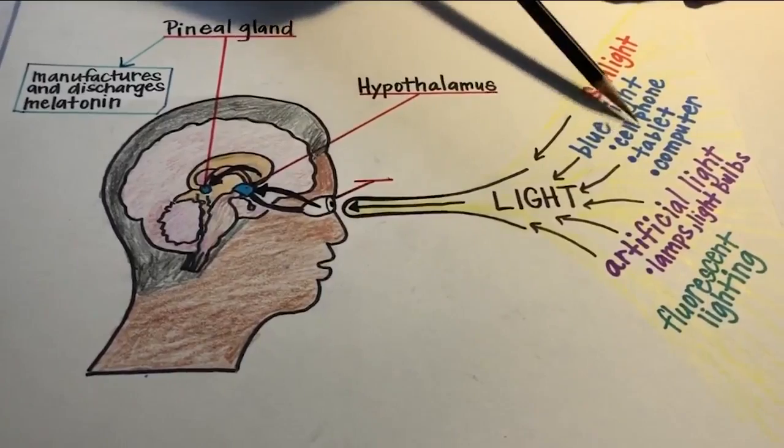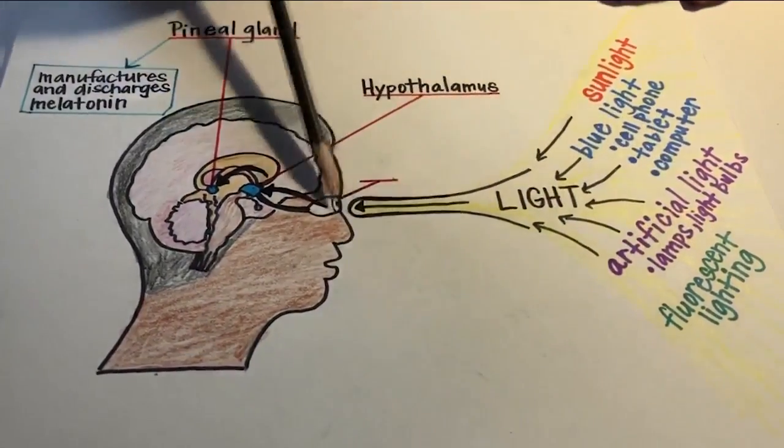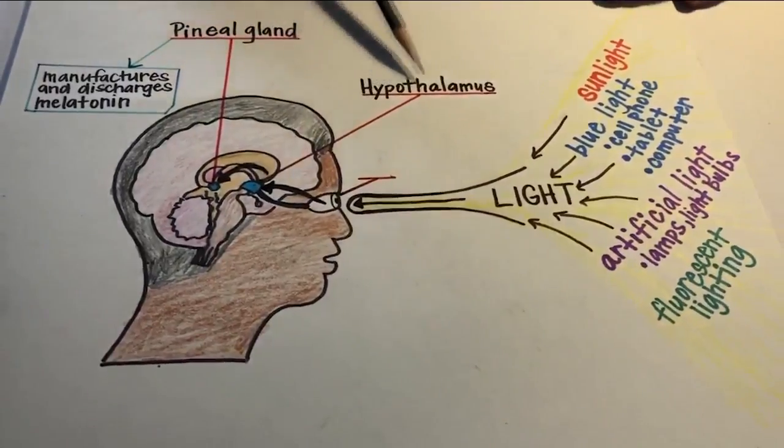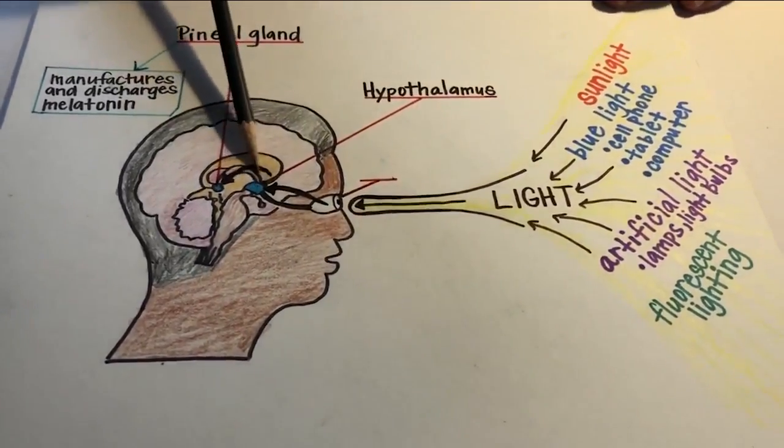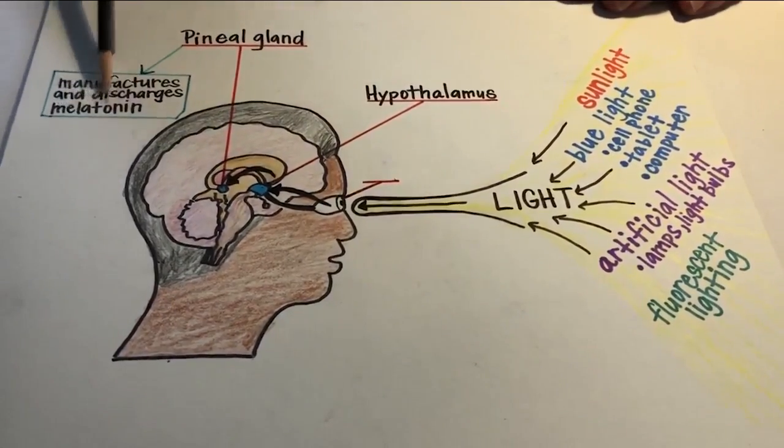So things like sunlight, blue lights, cell phones, tablets, artificial light, lamps, and fluorescent lights all go into your eyeball. They're processed by the hypothalamus. The hypothalamus signals the pineal gland to produce what's called melatonin.